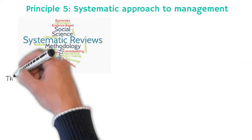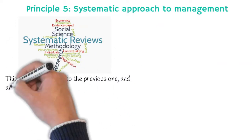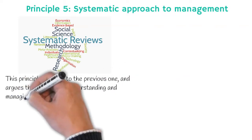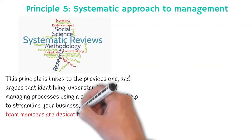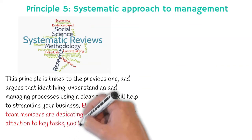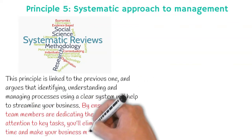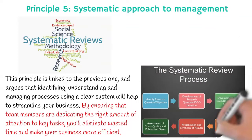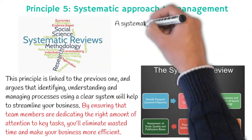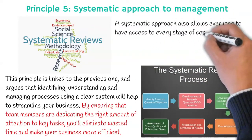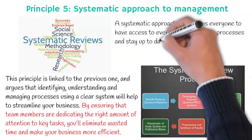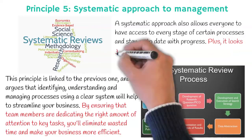Principle five: systematic approach to management. This principle is linked to the previous one and argues that identifying, understanding, and managing processes using a clear system will help to streamline your business. By ensuring that team members are dedicating the right amount of attention to key tasks, you'll eliminate wasted time and make your business more efficient. A systematic approach also allows everyone to have access to every stage of certain processes and stay up to date with progress. Plus, it looks great for prospective new clients when your business is organized — win-win.